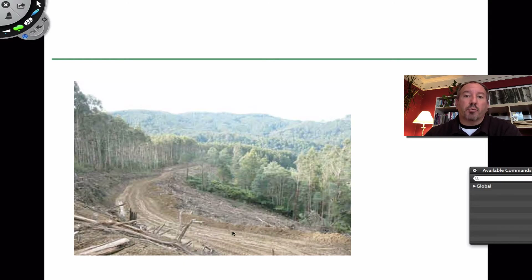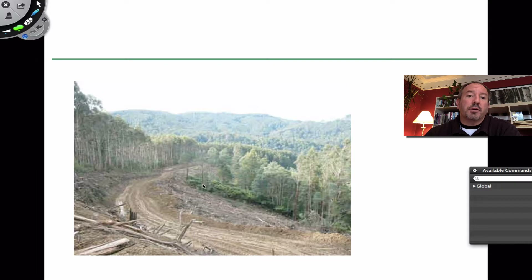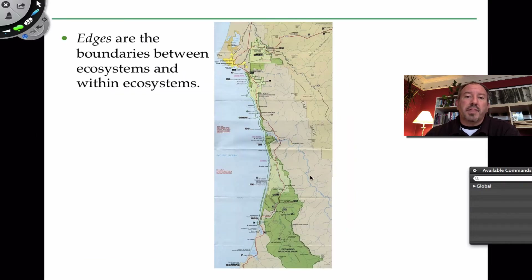When you create roads — for example, if you're coming in and logging an area — this basically provides a trail for unwanted organisms to come in. Furthermore, there's a lot more light, and organisms are adapted to sort of this isolation. Overall, diseases can come in, and there can be difficulties due to fragmentation. Depending on the organism, sometimes these barriers — separating this area from another area — can be really large. You could actually prevent gene flow from occurring from one population to the other, and then you get genetic isolation occurring.